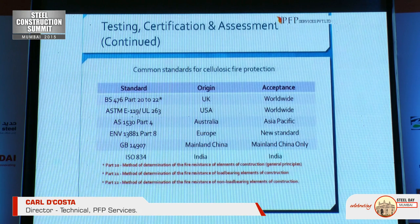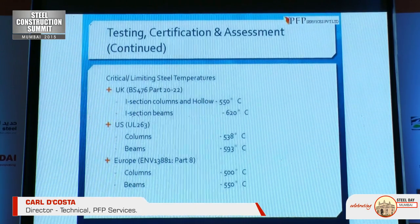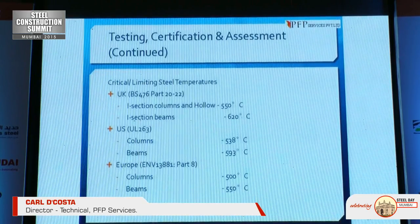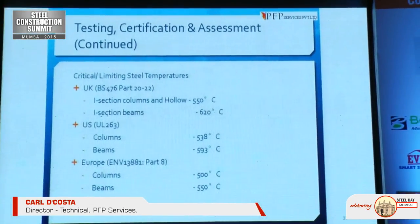For cellulosic fire protection, applicable standards worldwide include British, American, Australian, European, mainland China, and Indian standards. The critical steel limiting temperatures at which coatings are tested and thicknesses are designed to meet failure temperatures: under British/UK standards, the failure temperature for hollow sections and columns is 550°C, while for I-sections it is slightly higher at 620°C. Under US UL263 standards it is somewhat less conservative, while the most conservative is the European ENV standard at 500–550°C. India is currently following UK and US standards. This information is important for architects when designing failure temperature specifications.